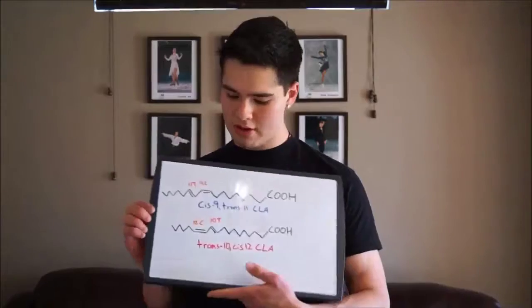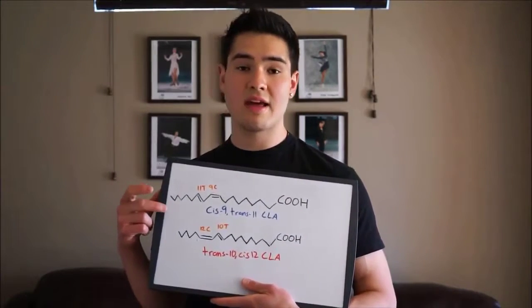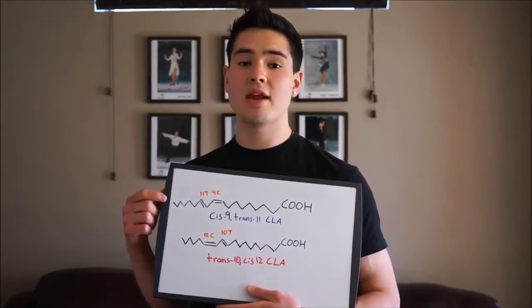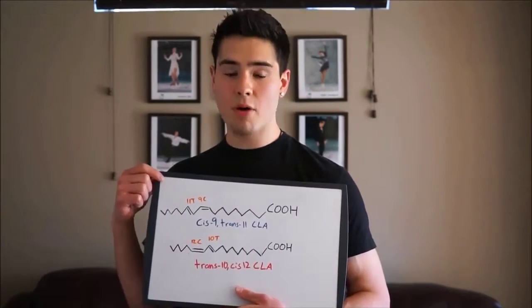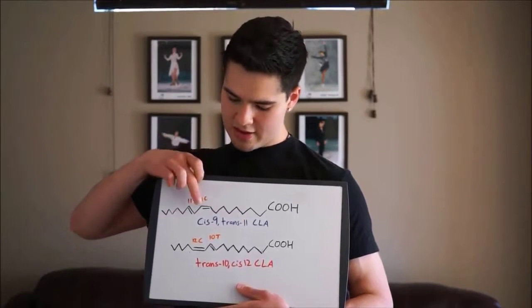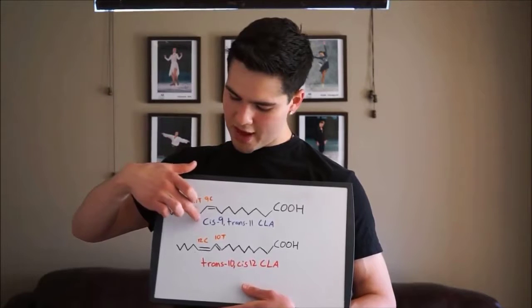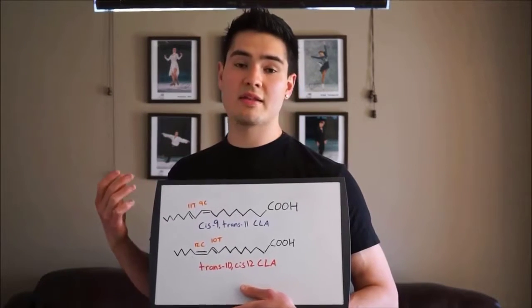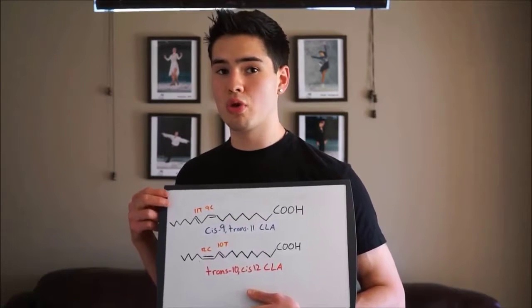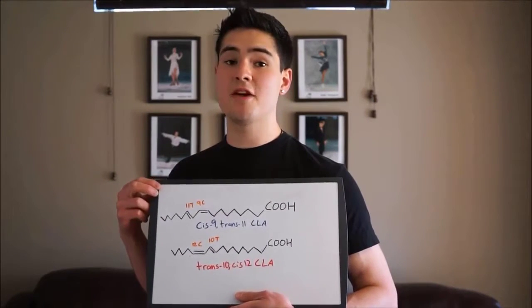Any linoleic acid that is in this form can be called conjugated linoleic acid, and because of this there are actually 28 different ways we can arrange it — so there are 28 different types of CLA. We only have to worry about two. We have to worry about cis-9 trans-11 CLA, which is the type found in CLA supplements. A cis bond means the hydrogens are in the same plane; a trans bond means the hydrogens are across from each other. So CLA is technically a trans fat, but it's the exception to the rule — it's the one trans fat that can actually be beneficial to you.